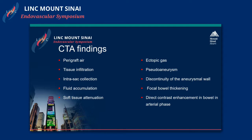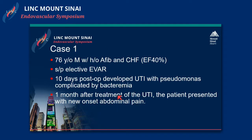Some of the CT findings that are important to consider: perigraft air and tissue infiltration, intrasac collections, fluid accumulation, soft tissue attenuation, ectopic gas, pseudoaneurysms, discontinuity of the aneurysm wall, focal bowel thickening, and direct contrast enhancement in the bowel.